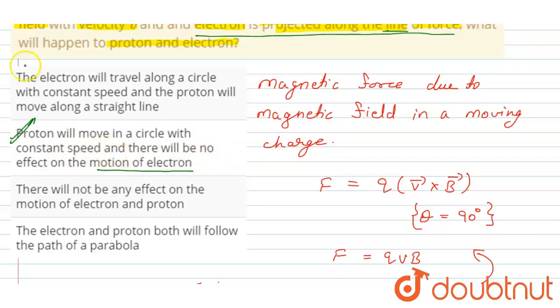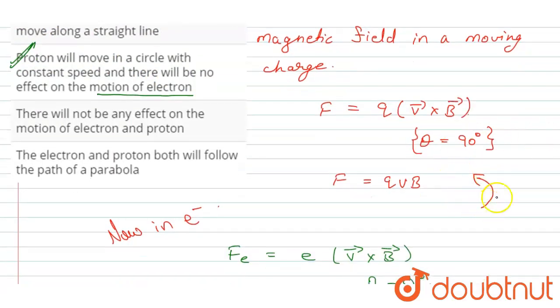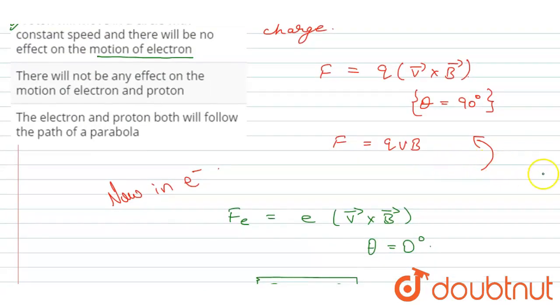And now when we talk about statement one: the electron will travel along a circle with constant speed and the proton will move in a straight line. So this statement is wrong because here we find that the proton is moving in a circular orbit and our electron is moving in a straight line.